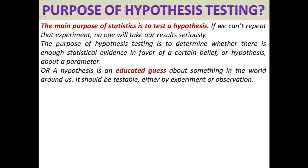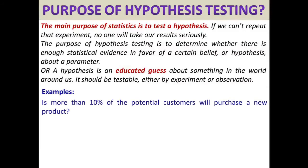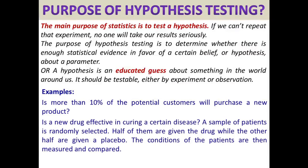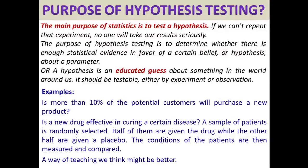It should be testable either by experiment or observation. For example, is there statistical evidence from a random sample of potential customers to support the hypothesis that more than 10% of the potential customers will purchase a new product? Or is a new drug effective in curing a certain disease? A sample of patients is randomly selected — half of them are given the drug while the other half are given a placebo, and the condition of the patients is then measured and compared. Or we can test a way of teaching we think might be better than the existing one. There are many more such cases where we can test our hypothesis.